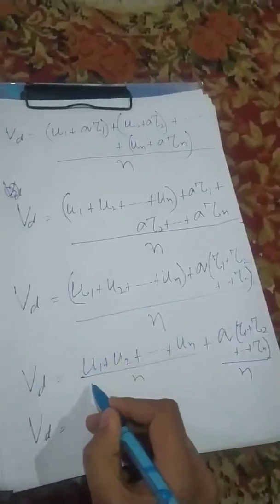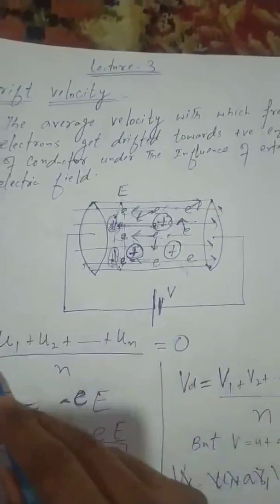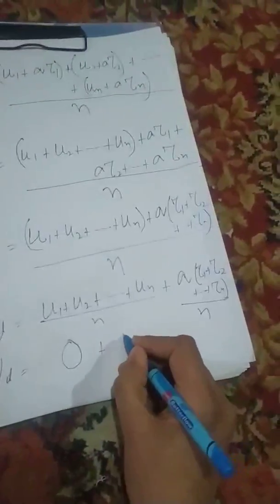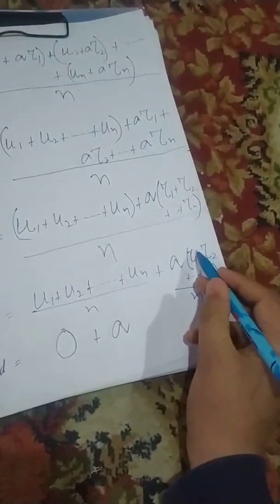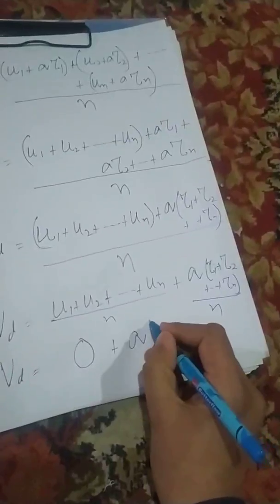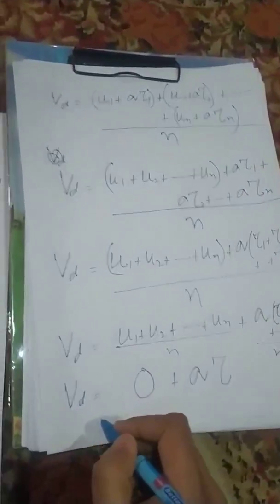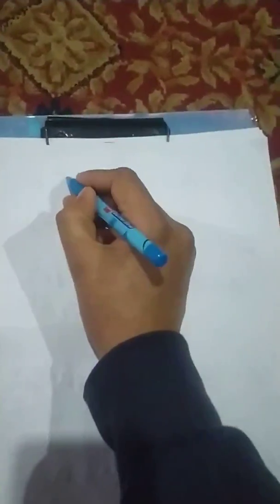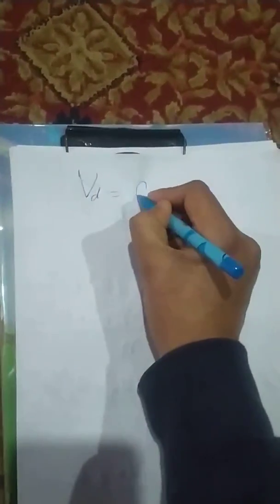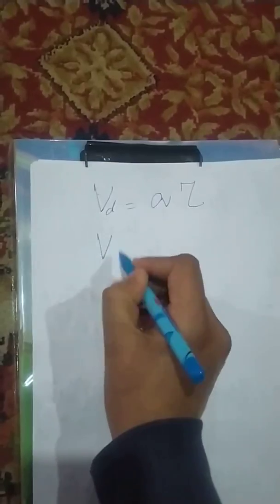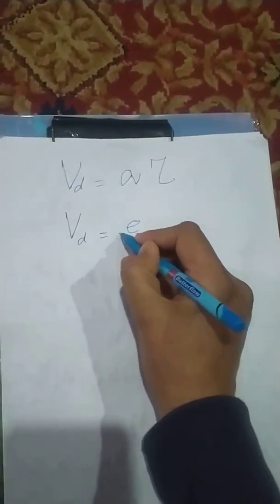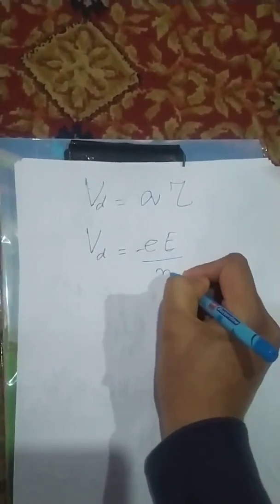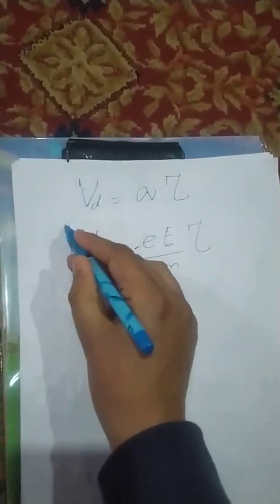So drift velocity equals a into τ. Substituting the value of acceleration a = eE/m, the drift velocity becomes: v_d = minus eE/m into τ. This is the expression for drift velocity of electrons.